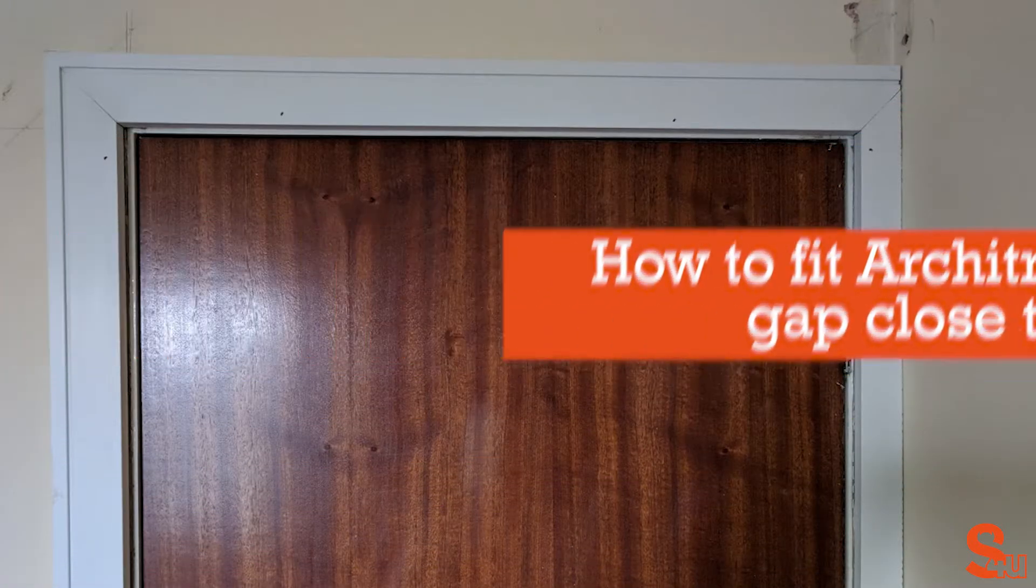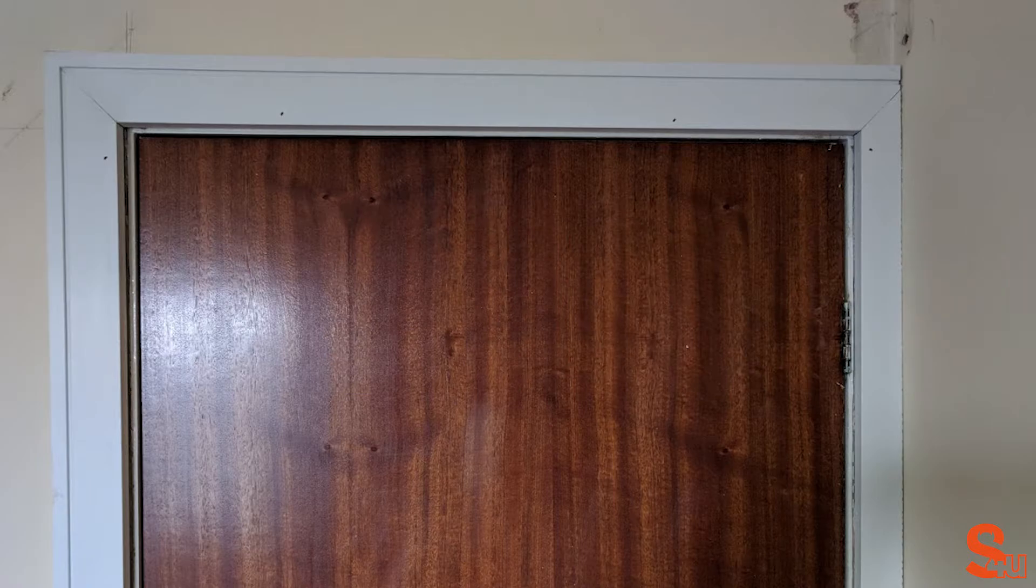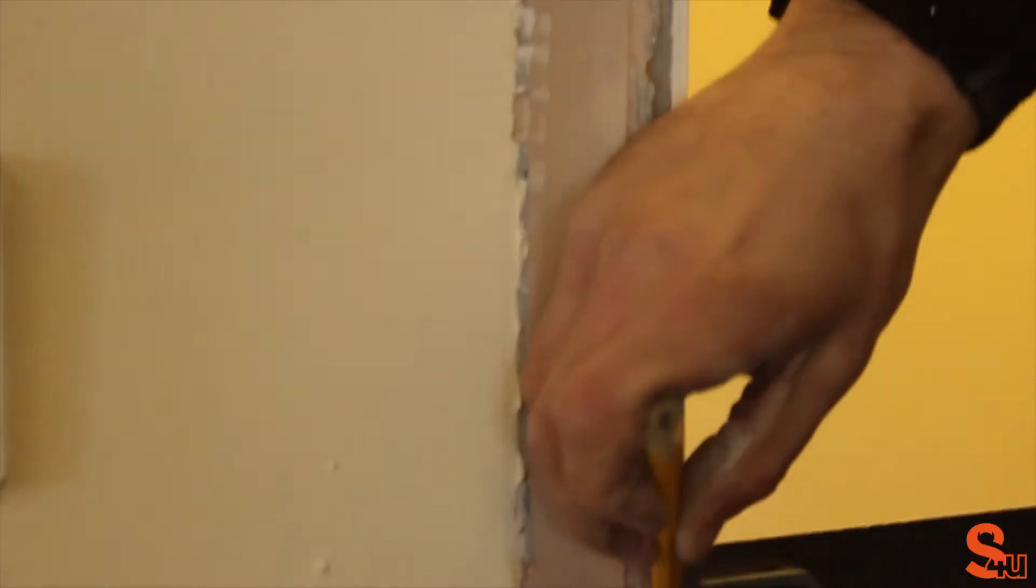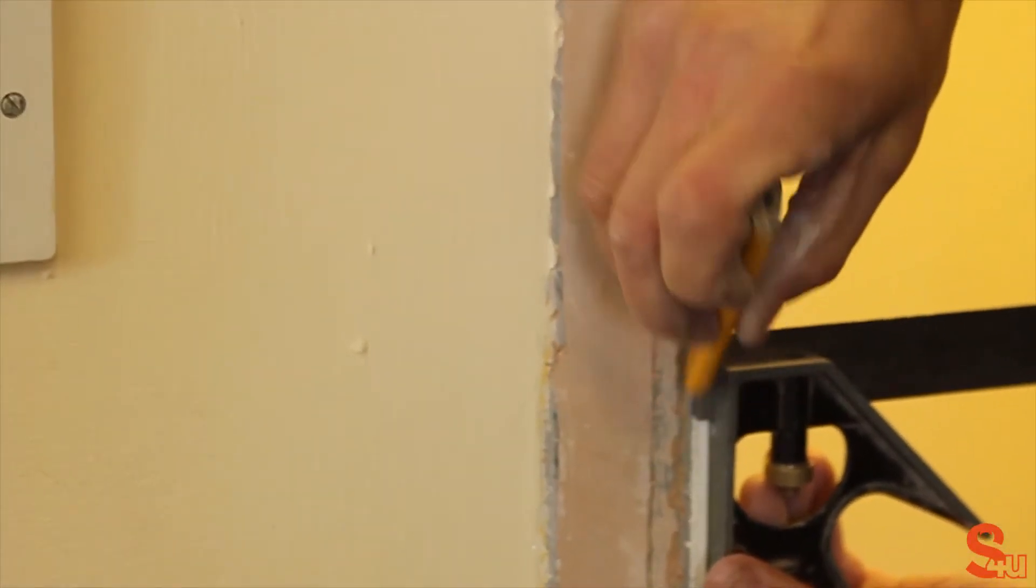How to fit architrave to a narrow gap close to the wall. Start off by drawing 5mm guidance lines around the door frame with your set square.